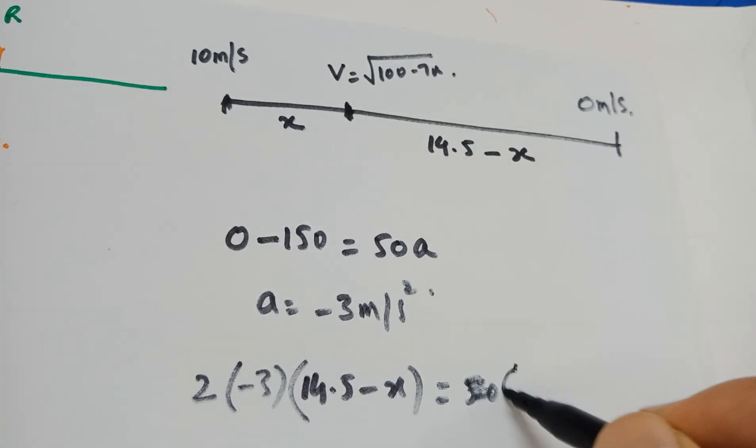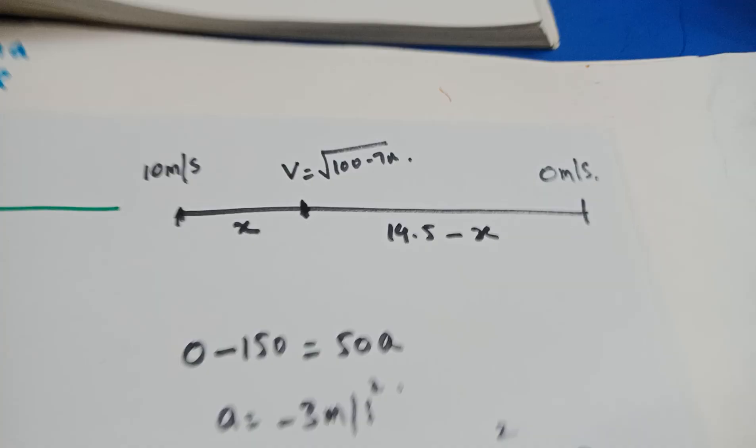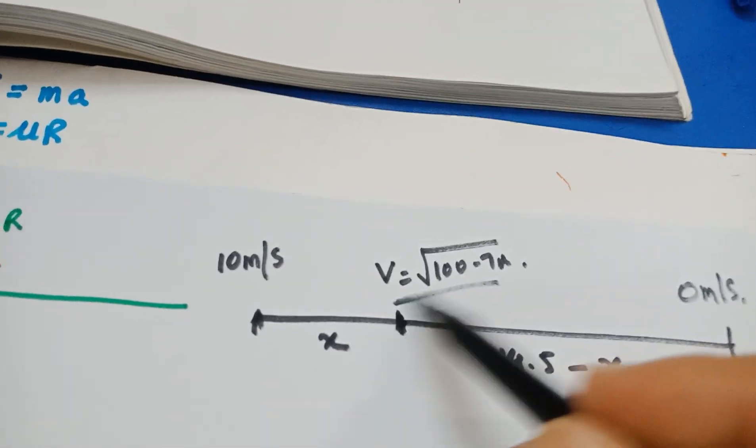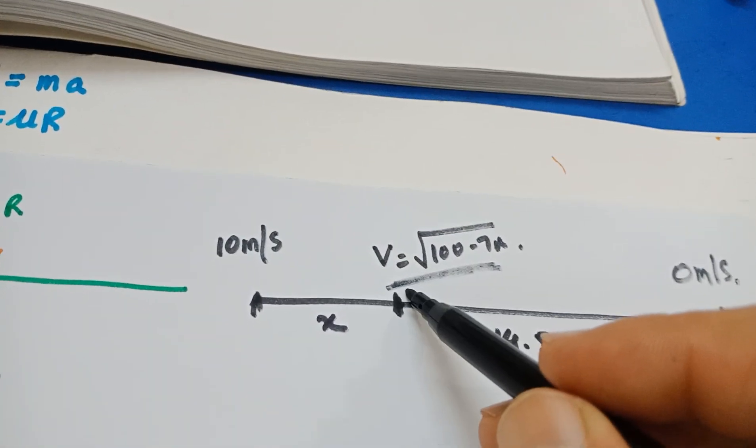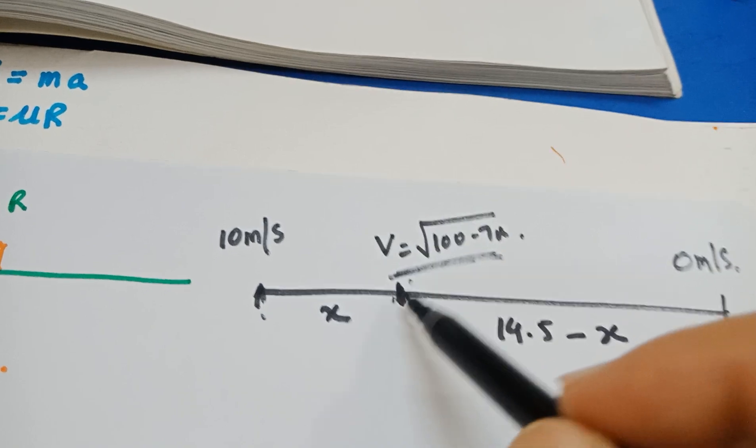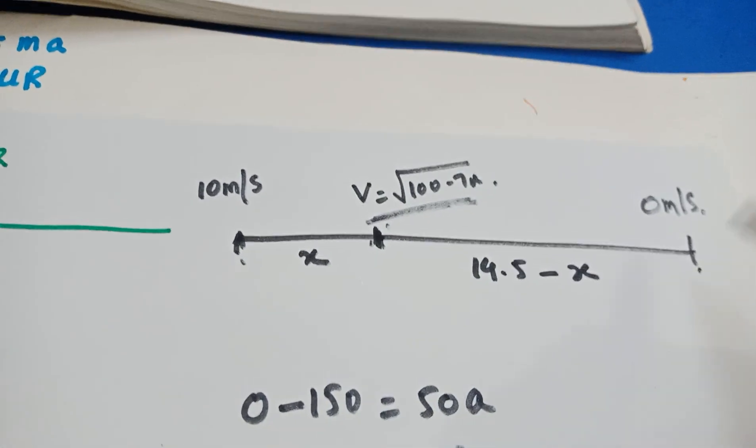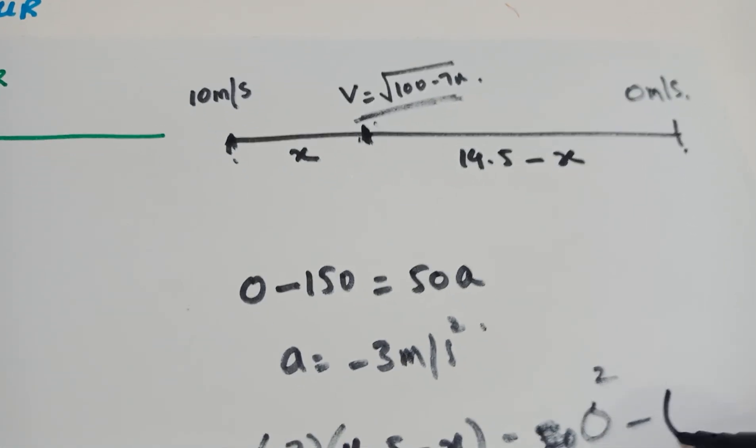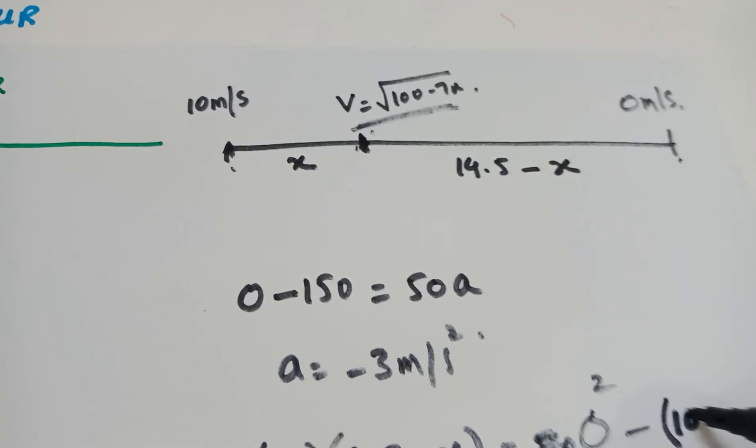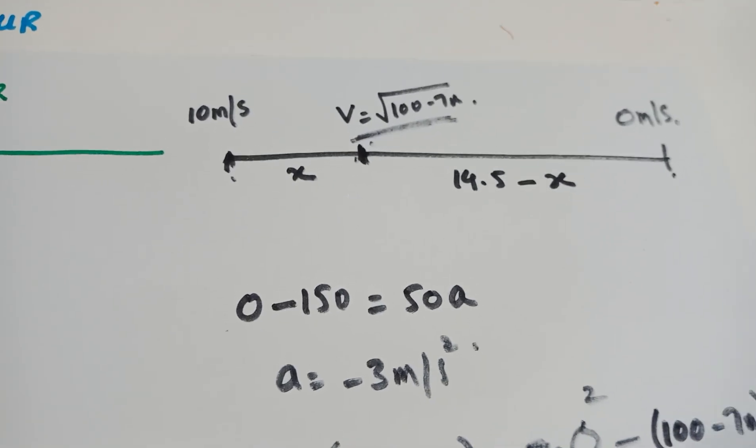It says V squared minus U squared. So when you square this, this is going to be now U. The final speed for this section is going to be the initial speed for the next section. So this is zero squared minus, I'll be putting that in bracket, this is 100 minus 7X.